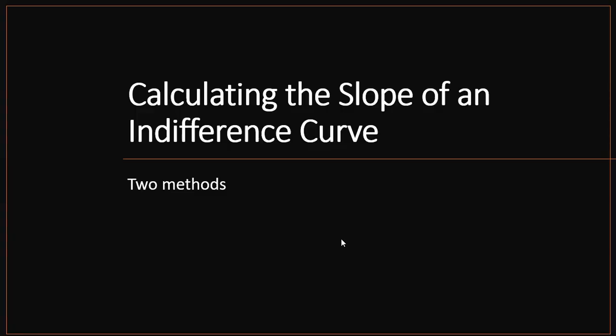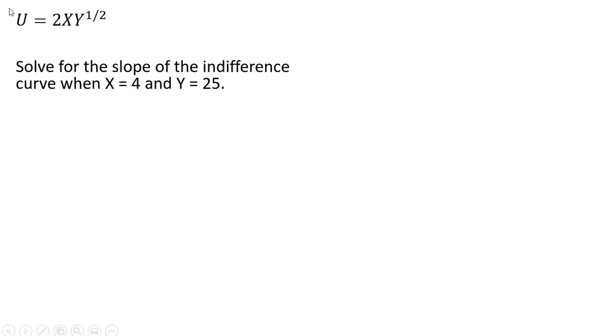In this video, we're going to calculate the slope of an indifference curve using two methods. Here's our utility function. We want to solve for the slope of the indifference curve when x equals 4 and y equals 25.